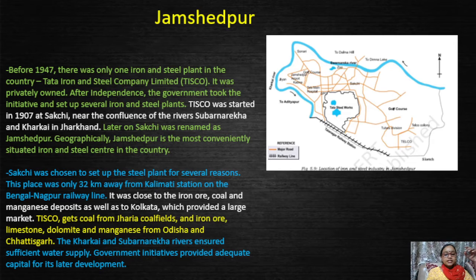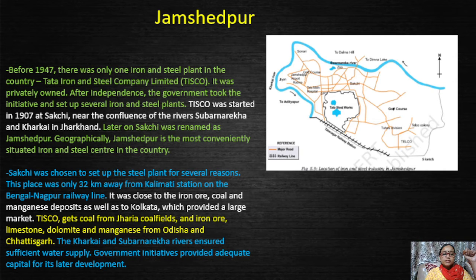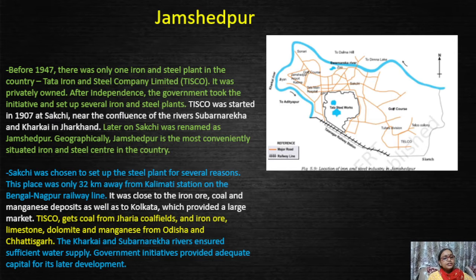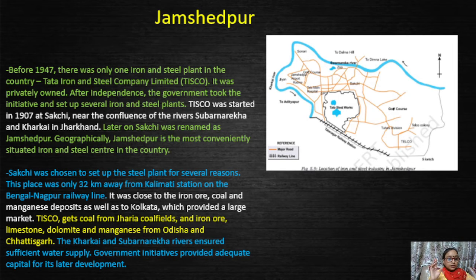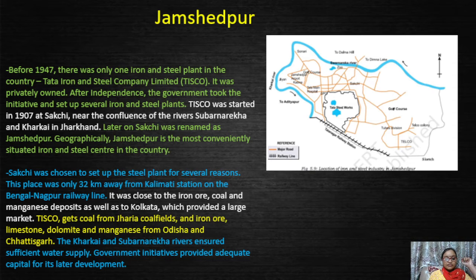If an industry is established and a manufacturer wants to transport goods, the railway line is key. Looking at the map of iron ore, we find the iron and steel plant because this is where raw materials are found. The area is also close to Kolkata, which provides a large market. So we got all the factors influencing the location of the industry.